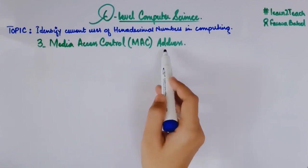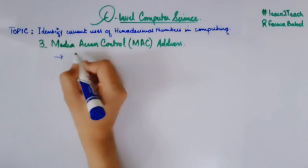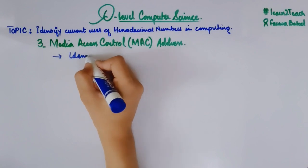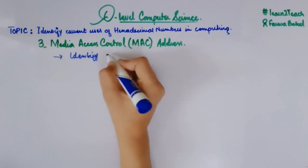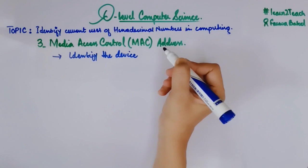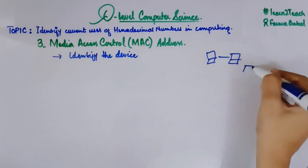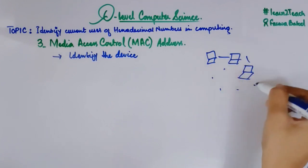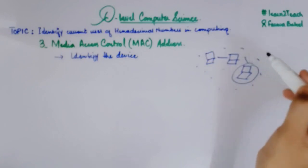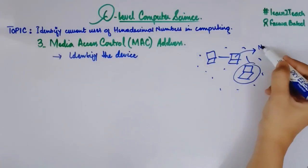MAC address is used to identify the device on a network. In an internet we have lots and lots of computer machines that are connected with one another, and in order to identify a particular device, I need the MAC address of it.